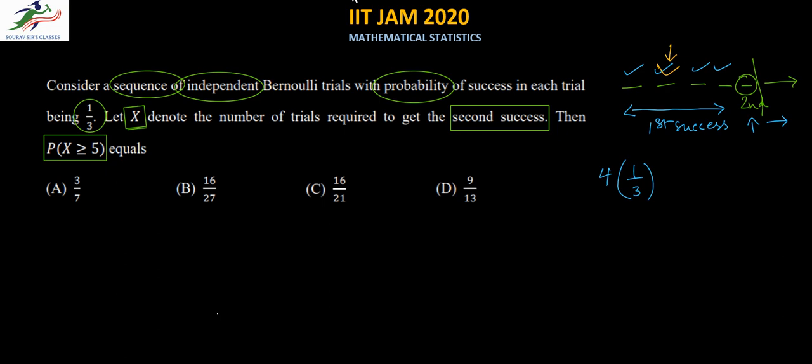Let's say it is happening here—the first success is happening here—then the other three are all failures. These are all failures, these are not successes. So probability of success in one trial multiplied by probability of failure, which is two by three, in the other three trials, so that means two by three whole to the power three.